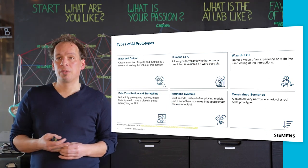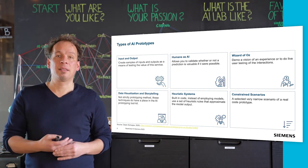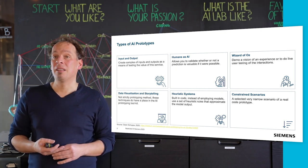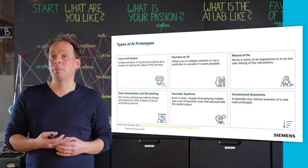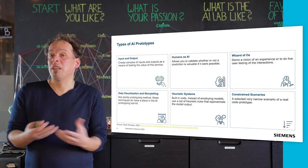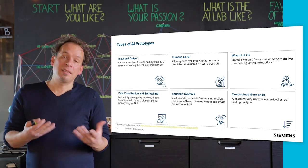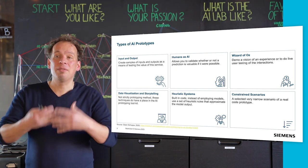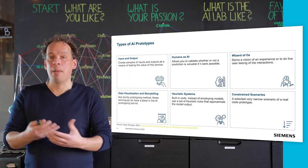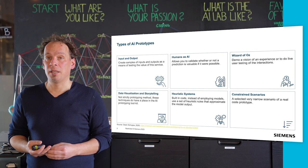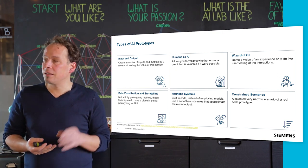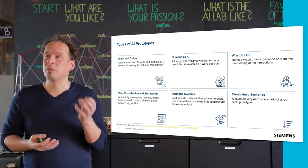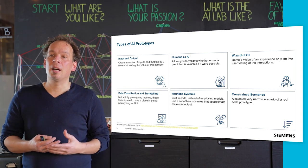There are different types of prototypes. On one side, you can create samples of inputs and outputs to test the value of the service — is somebody clicking on a page or not. Human-SAI means abstracting from the actual prediction task but validating whether a prediction is valuable — it's a bit like a mock-up. Data and visualization storytelling is a great way to slice the elephant and view, distribute, and dice your data.